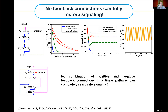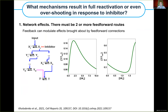We proved that for arbitrary networks with one activating route and arbitrary numbers of positive and negative feedback connections, no combination of feedback connections can completely restore the signaling — only partial reactivation occurs. But clinically, we know that complete reactivation is observed. What can lead to this? We found two things.